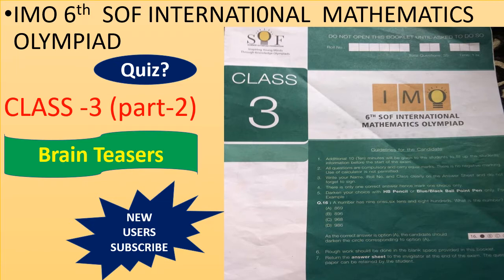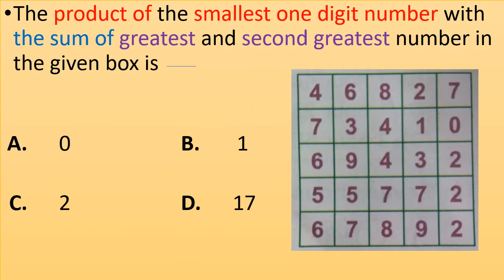The first question is: The product of the smallest one-digit number with the sum of greatest and second greatest number in the given box is: Options are A. 0, B. 1, C. 2, D. 17. Take your time and answer the question.